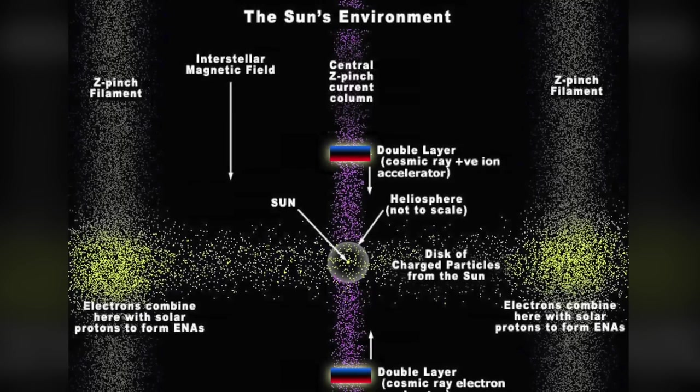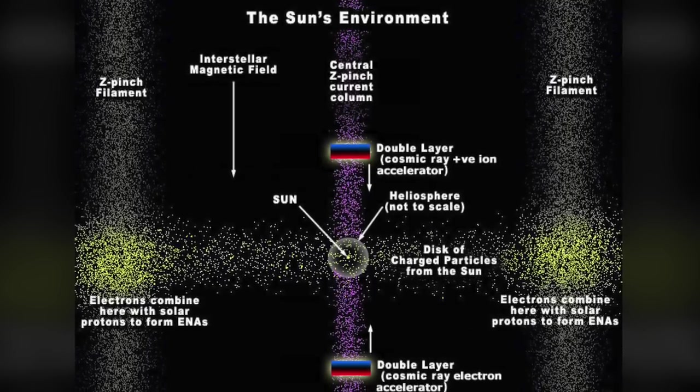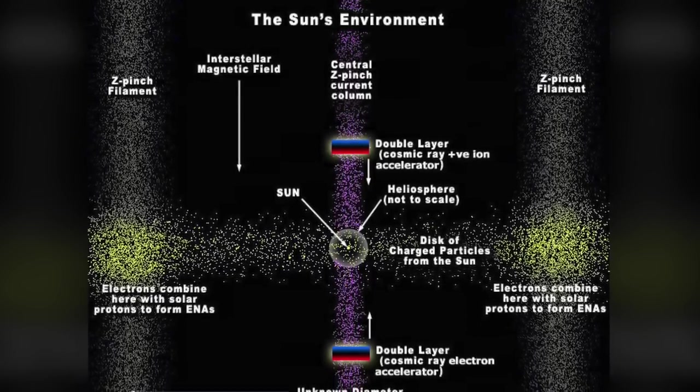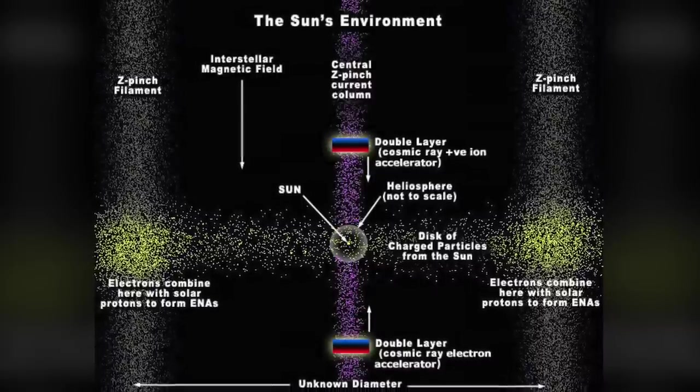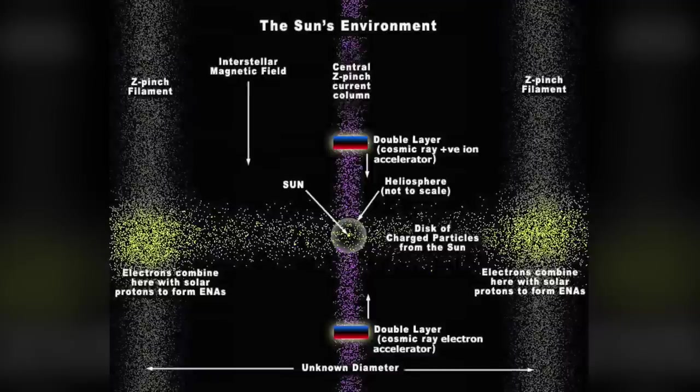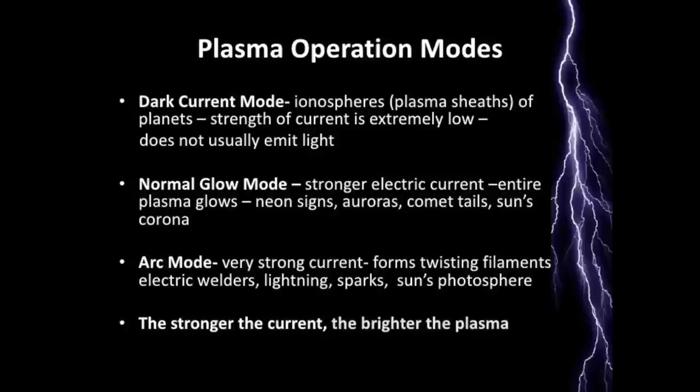In any event, the Marklund convection process may well be occurring all along the vast length of the Birkeland current that extends on either side of our sun's heliosphere. And that Birkeland current is not visible from Earth, probably because it's an aging normal Birkeland current that has a weaker charge density along its length than will be found at the z-pinch, the heliopause, the heliosphere.